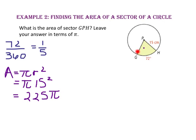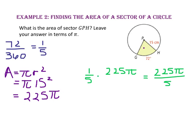The area of sector GPH is one-fifth of the entire area, 225π. So 225π divided by 5 gives us 45π. The area of sector GPH is 45π centimeters squared.